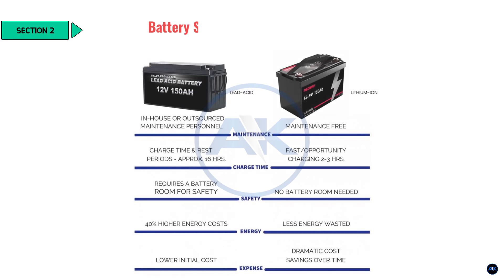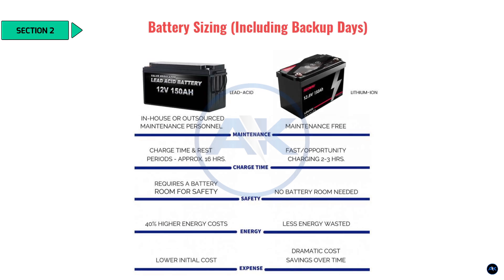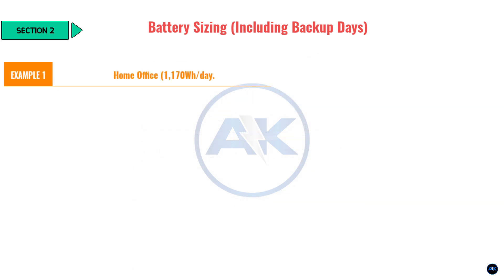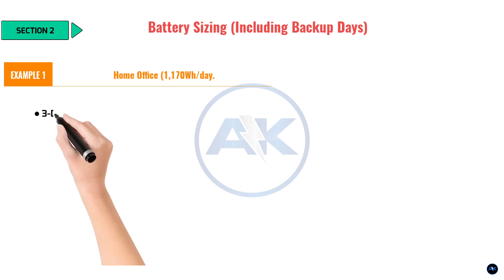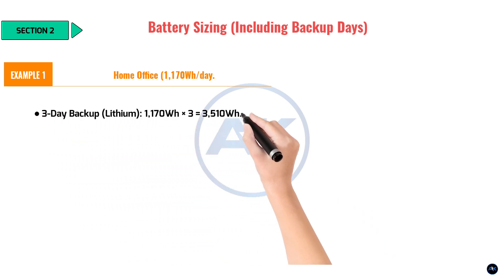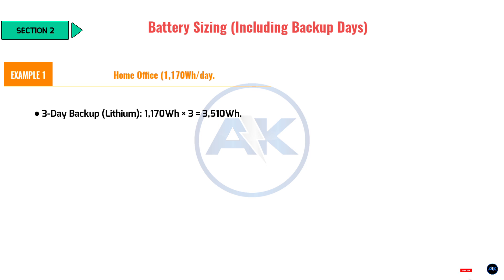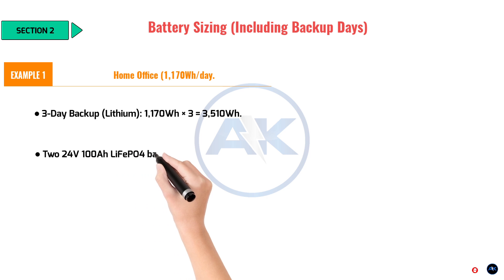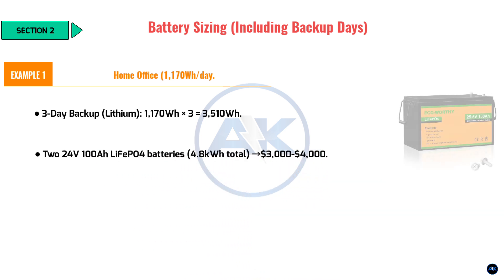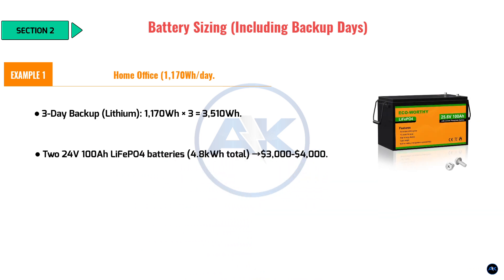Section 2: Battery sizing, including backup days. Now let's size your battery. Do you want backup power for cloudy days? A good rule is 3 to 5 days of autonomy. Example 1: Home office load — 1,170 watt-hours per day, 3-day backup, lithium. 1,170 Wh × 3 = 3,510 watt-hours. Two 24V 100Ah lithium iron phosphate batteries = 4.8 kWh total, costing $3,000–$4,000.